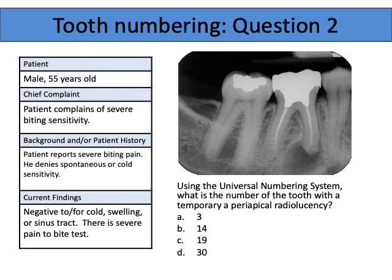Turning it over — on this one, we see a mesial and distal root. If we look at its position in the arch, this certainly looks like a mandibular molar. If we align it up again, we're looking at the patient — this is the patient's lower right. So tooth number 30.